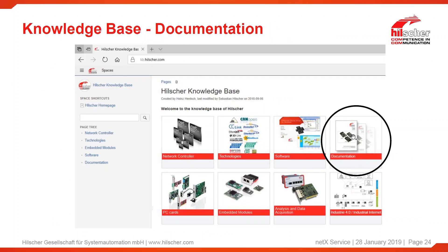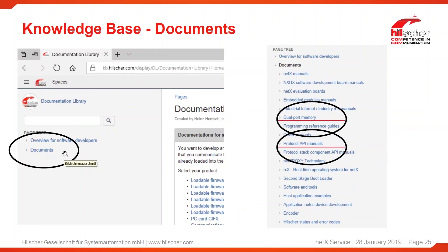The next area is the documentation area. In the documentation area, I always recommend expanding the documents folder on the left. Under this folder we have two key documents. The first one is the dual port memory documentation. Dual port memory is basically the key interface where you communicate from your application to our stacks and into the network. Below that we have protocol API manuals — these are the manuals explaining how you use those stacks to really communicate. Not just the dual port memory as the interface, but the stack behind it. The protocol API manuals explain how to communicate with those stack parts behind this interface.